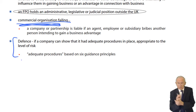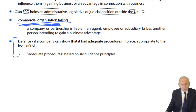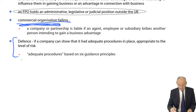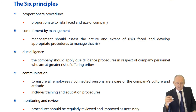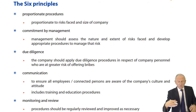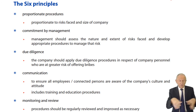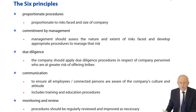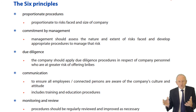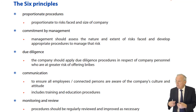Defensively, if the company can show that they did have what they thought were adequate procedures in place, appropriate to the level of risk, that is a defence. Adequate procedures has six guiding principles. The first is proportionate procedures. At OpenTuition, you're not likely to get any advantage by offering a bribe — it's not going to happen. We have in excess of 400,000 students; there is no way any one of us is going to open that door. It could not be worth our while for you to even think about offering a bribe.